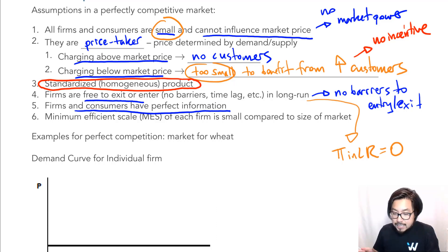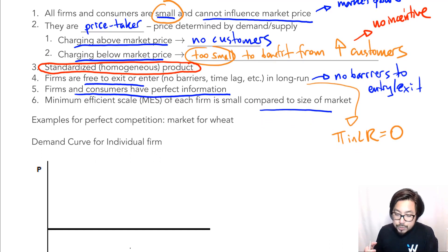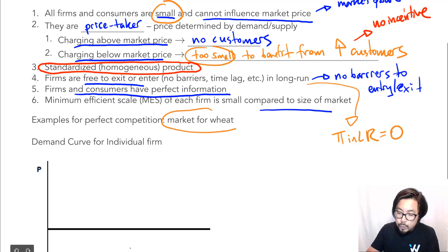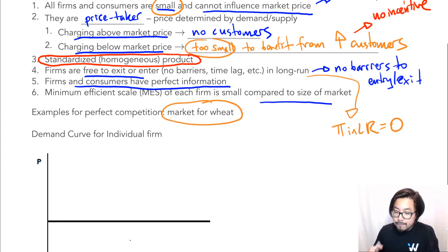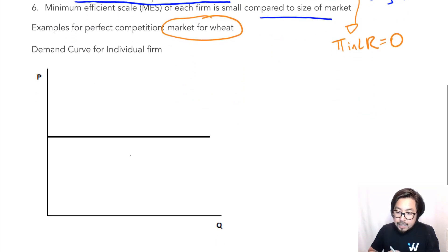Finally, the minimum efficient scale (MES) of each firm is very small compared to the size of the market. The best example of a market that resembles perfect competition is the market for wheat — wheat is very standardized, there are many producers and consumers, and the industry as a whole is very competitive with price reflected accordingly. Wheat is one of the better examples you'll see in textbooks of a perfectly competitive market.